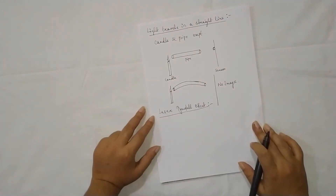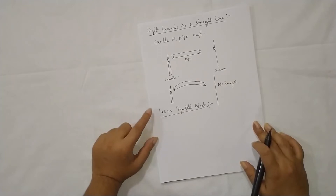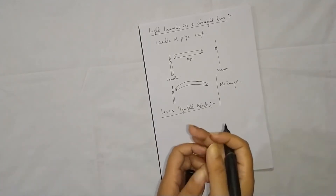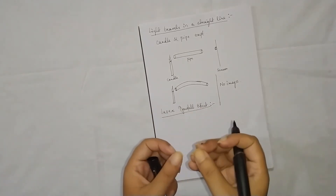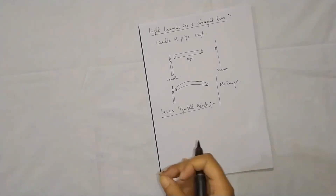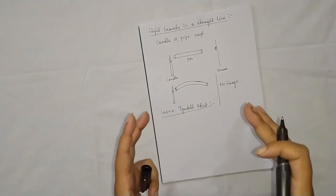The Tyndall effect is the phenomenon of scattering of a beam of light when it is traveling through small suspended particles, such as colloidal solutions, fog, mist, smoke, or dust. When light travels through these media, you can see the path of the light because of scattering by the small suspended particles. That is known as the Tyndall effect.